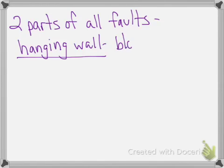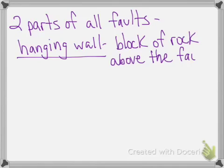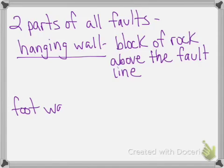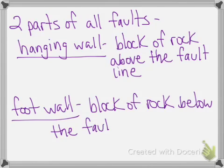There are two parts to all faults. The first is the hanging wall — a block of rock that is above the fault line, above the crack in the rock. The foot wall is just the opposite — the block of rock that is below the fault line. A way to remember it: if you're hanging, you're up in the air, above the ground. And your feet are on the bottom of your body, so the foot wall is below the fault line.